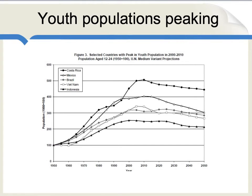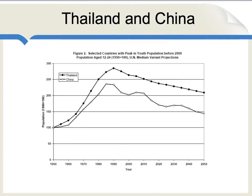If you'd like to see some countries where the youth population right now is more or less peaking, here are some graphs for Costa Rica, Mexico, Brazil, Vietnam, and Indonesia. Right around 2010, you can see a variety of peaks or near peaks. In Thailand and China, you see those peaks coming around 1990. Since then, the youth population in Thailand and China has been falling.